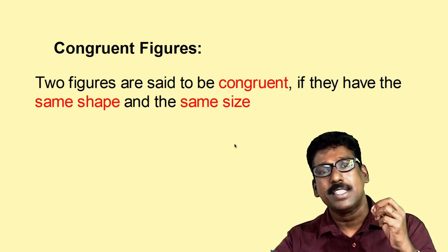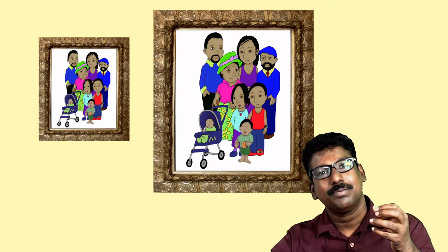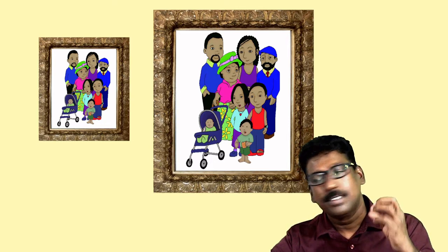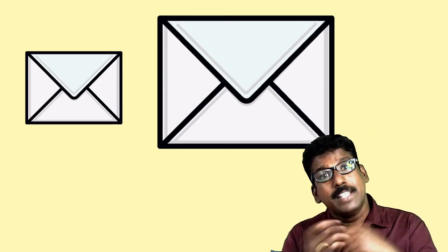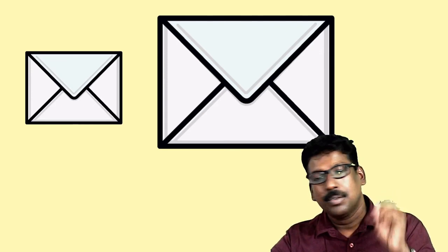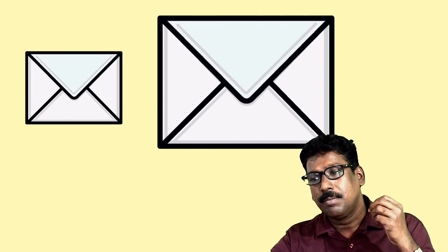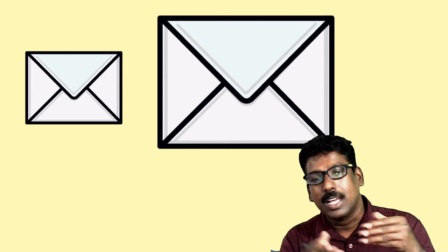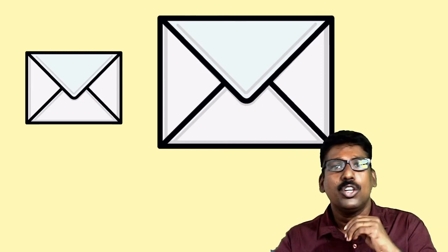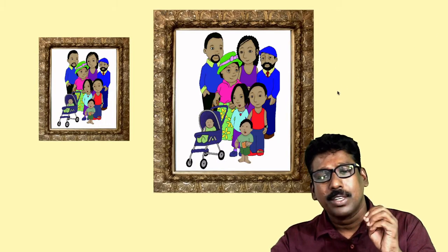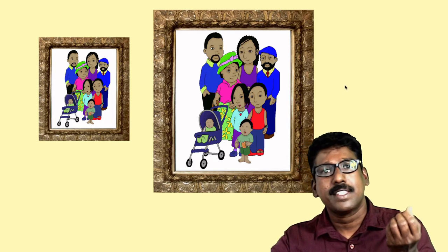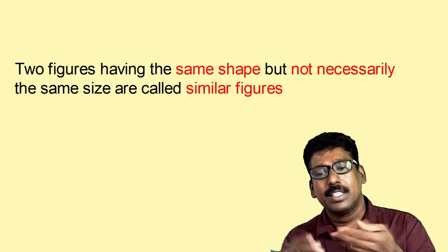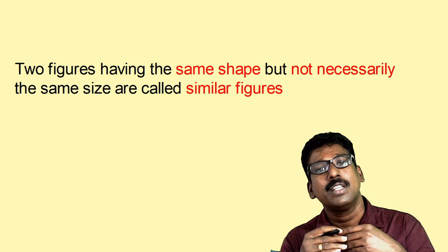Now look at some other figures. Here you have photos of two book covers and here two family photos. Are they congruent — do they have the same shape and the same size? Obviously not. Then what about their shape? Yes, they have the same shape. You can see both covers having the same shape, and both pictures look the same. But the sizes are not equal. Such figures we call similar figures: two figures having the same shape but not necessarily the same size are called similar figures.